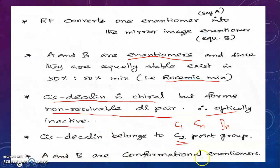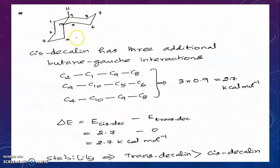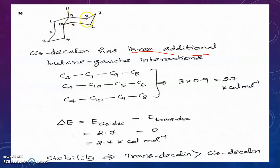Cis-decalin belongs to the C2 point group. When a molecule belongs to C1, Cn, or Dn point groups, it is chiral. So cis-decalin is chiral but optically inactive because it forms a non-resolvable DL pair. In cis-decalin, the fusion of the two rings introduces three additional butane-gauche interactions: C2–C1–C9–C8, C4–C10–C5–C6, and C4–C10–C9–C8.